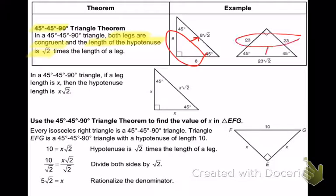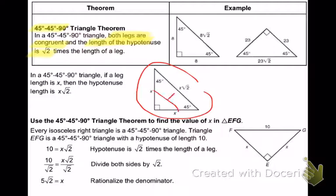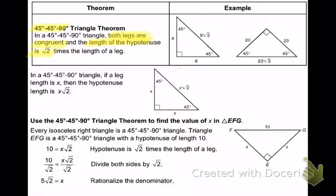If my legs are 23, my hypotenuse is going to be 23 square root of 2. The relationship says if the sides are length x, the hypotenuse is going to be x square root of 2. If the sides are 3 and 3, the hypotenuse is 3 square root of 2. If the legs are 7 and 7, the hypotenuse is 7 square root of 2.